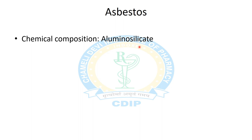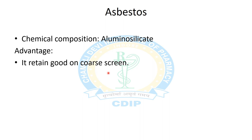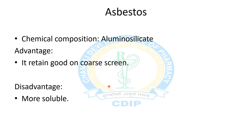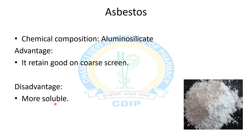The next filter aid is asbestos, whose chemical composition is aluminium silicate. Advantage: it retains well on coarse screens, so when a coarse screen is used as filter media, asbestos is a suitable filter aid. Disadvantage: it is more soluble, meaning traces of asbestos may appear in the filtrate.